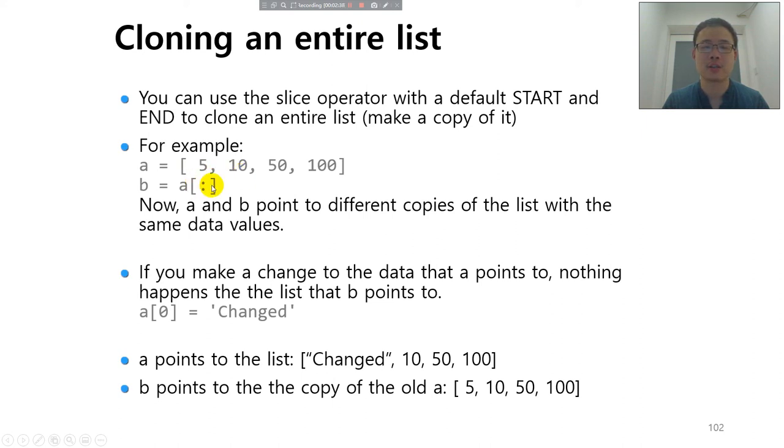If it starts from 3 to the end, you know that it starts from the fourth index to the end. If it's written as blank to blank, it's from the beginning to the end. Therefore, B equals A from beginning to the end is a cloning of the entire list of A.